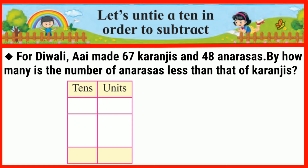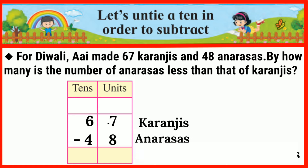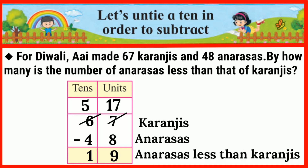If this is your question: the number of anarsas less than karanjis — 67 minus 48 is equal to 19. So 19 anarsas less than karanjis.